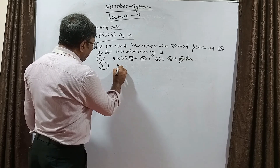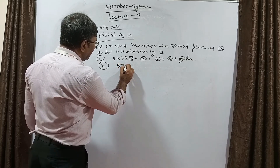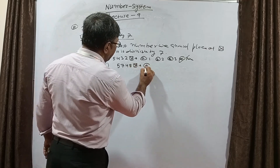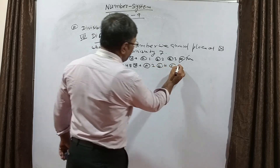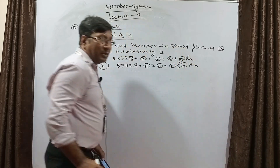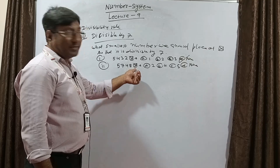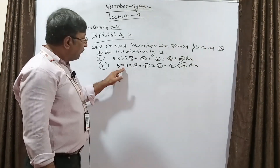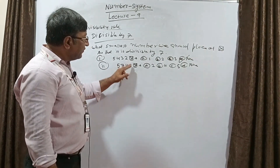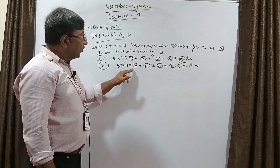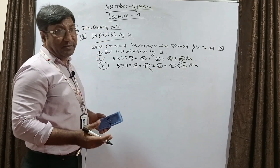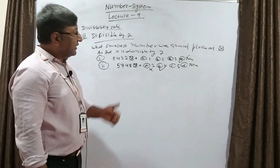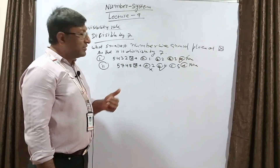One more example: suppose the number is 5, 7, 4, 8, and a blank. Options are: A=2, B=4, C=5, D=None. We check by dividing: 7×8=56, remainder 1; bring down 14 — 7×2=14; bring down 8 — 7×1=7, remainder 1. Now checking options: for 2, we get 12 — not divisible by 7; for 4, we get 14 — 7×2=14, divisible! For 5, we get 15 — not divisible. So our correct answer is 4.